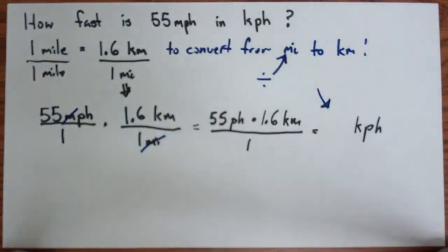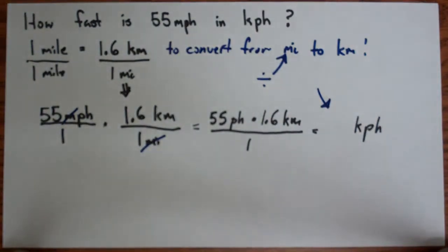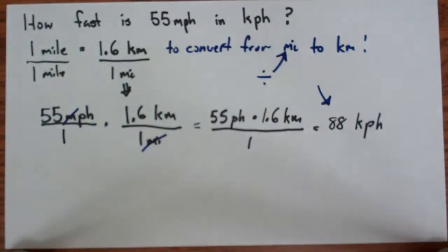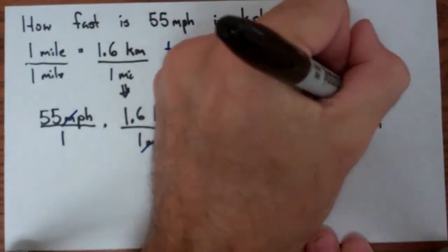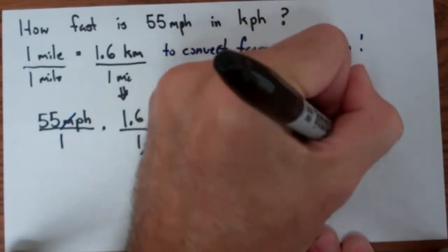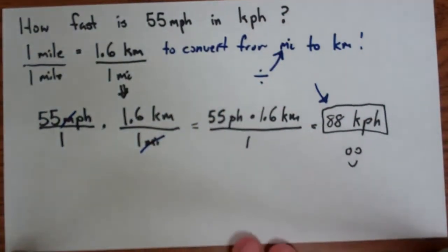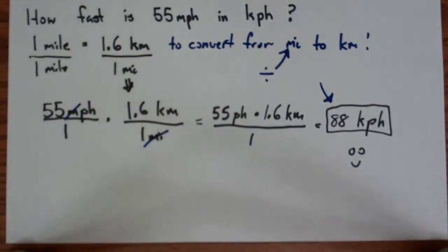And again, I'm going to grab my TI calculator and do 55 times 1.6 and end up with 88. So 55 miles per hour is 88 kilometers per hour. So you're going pretty fast. So don't get caught speeding in another country because you didn't know how to do the conversion.